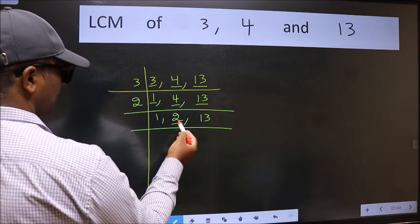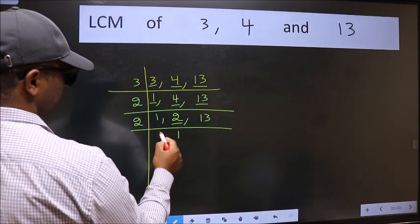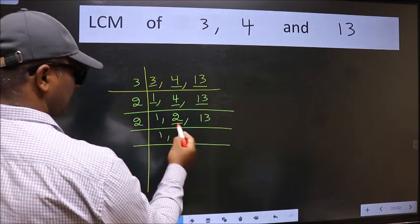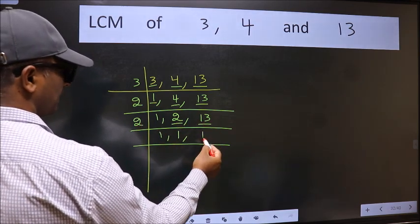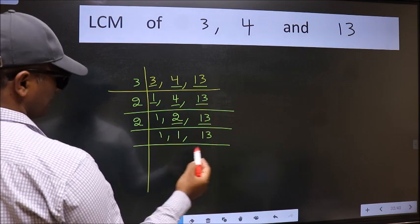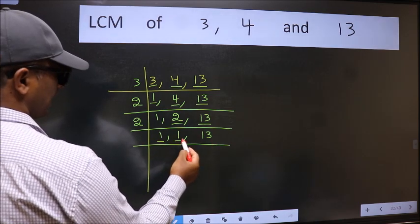Now here we have 2. 2 is a prime number so 2 wants 2. The other number 13 not divisible by 2 so we write it down as it is. Now we got 1 here and here.